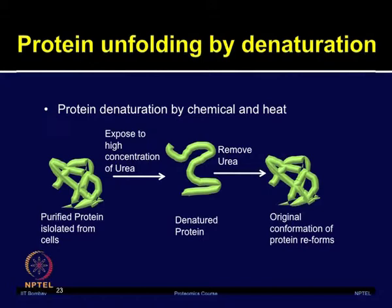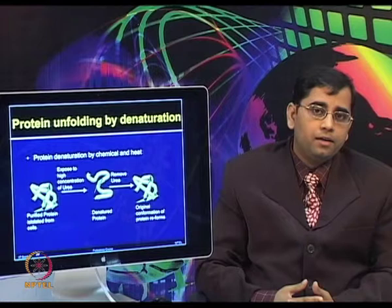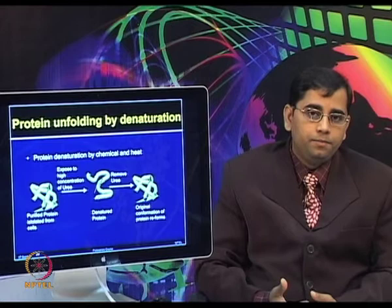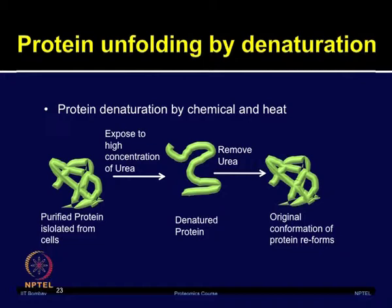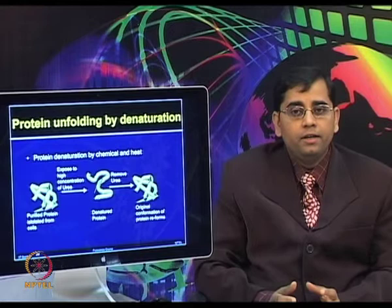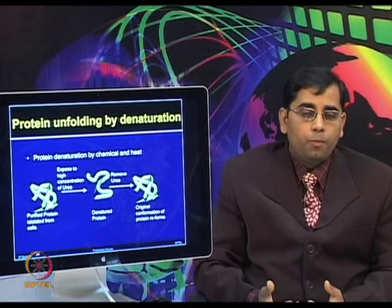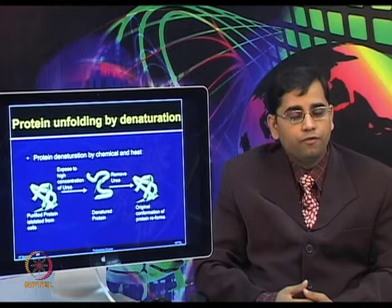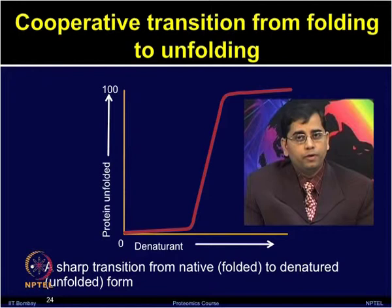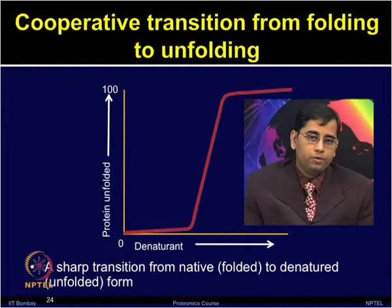As seen in the classical experiment of Anfinsen, protein unfolding can be done by using denaturants, whether chemical like urea and guanidinium chloride, or by heat treatment. If you take a purified protein and expose it to high concentration of denaturants, that will result in a denatured protein. If you remove the denaturing condition, it will again form proper folding and the protein conformation will be restored. Various hypotheses and mechanisms have been proposed for how this folding-to-unfolding process works. Let us talk about the cooperative transition from folding to the unfolded form.